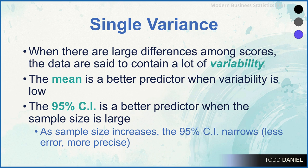That tells us the mean is going to be a better predictor when variability is low. If all of the scores are very close to the mean, then the mean is going to be a great predictor because there's very little error between the highest and lowest score. If the scores are varied and spread out and widely distributed, then the mean is not that useful — it doesn't tell us as much as when variability is low.